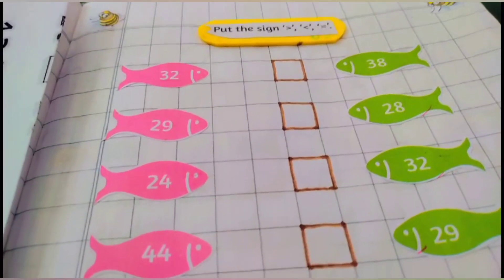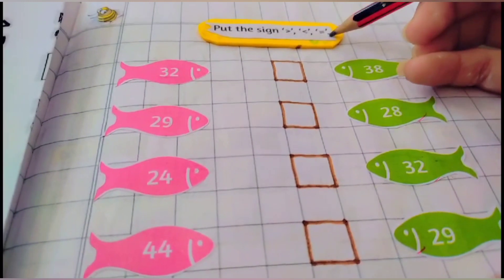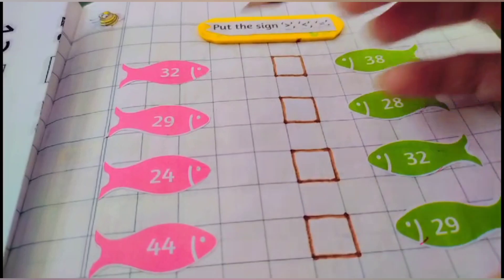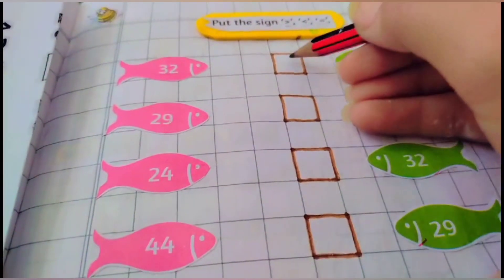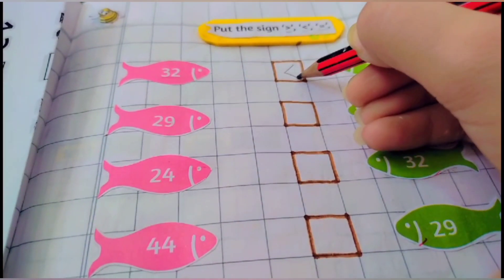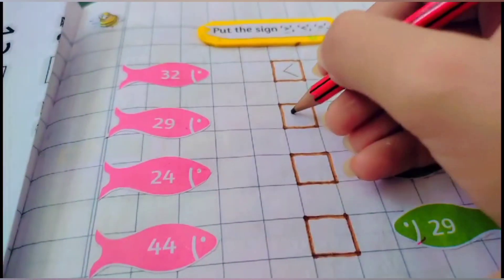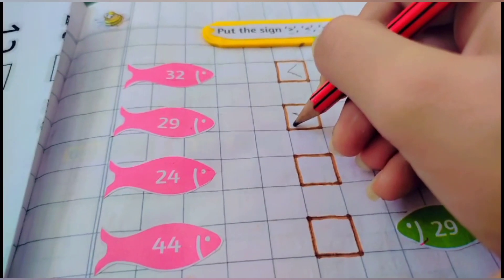Our next activity is put the sign smaller, greater, equals to. Which one is greater? 38 is. Now we will make like this. Open our mouth on the greater number. Which one is greater? 29. Open your mouth on the greater side.